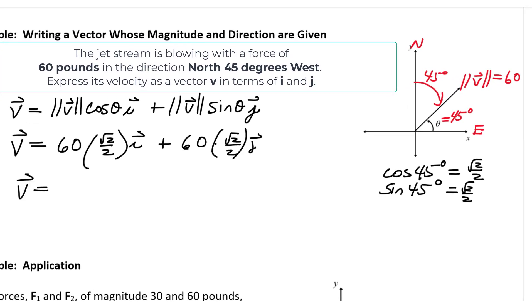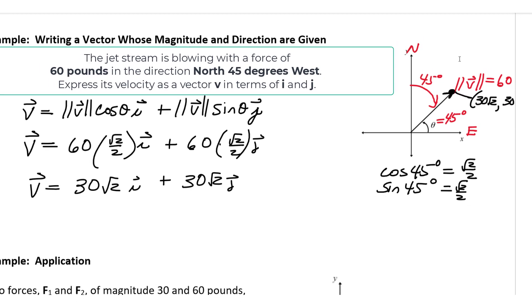Simplifying, 2 goes into 60 30 times. We have 30 root 2 i plus 30 root 2 j. In other words, the terminal point of this vector v is going to occur at the pair of coordinates 30 root 2, 30 root 2.